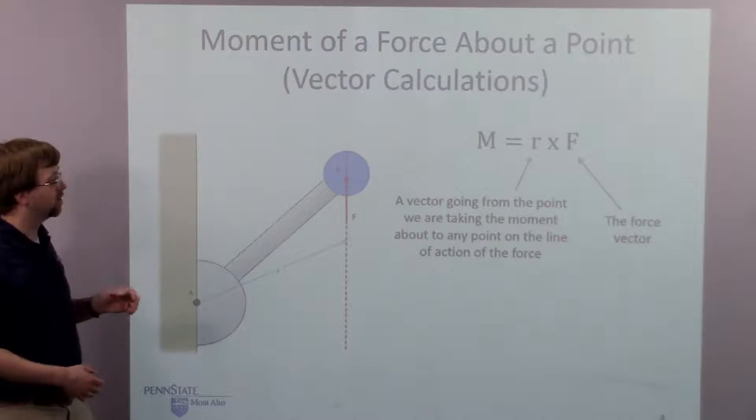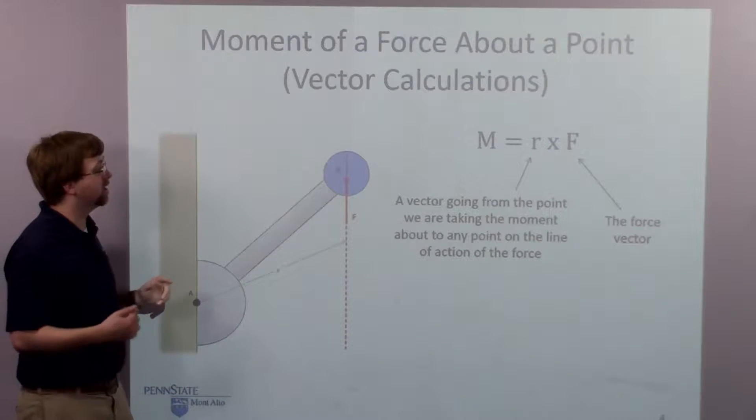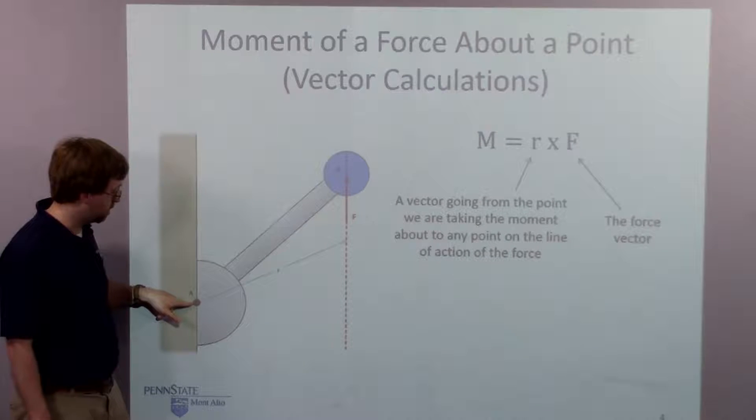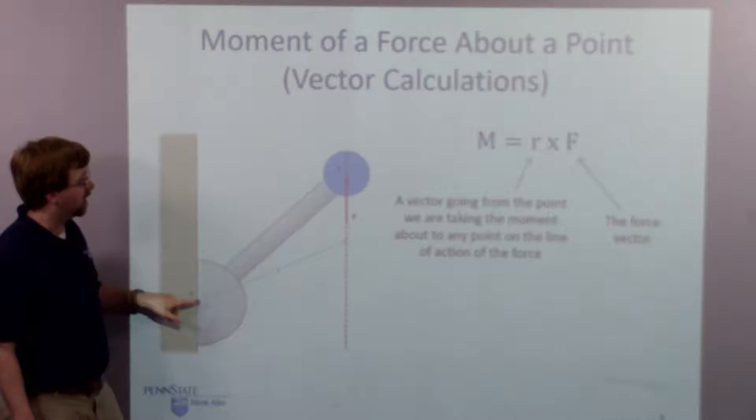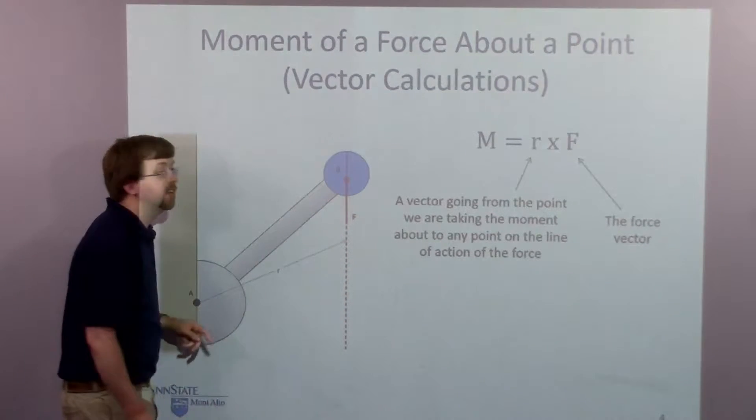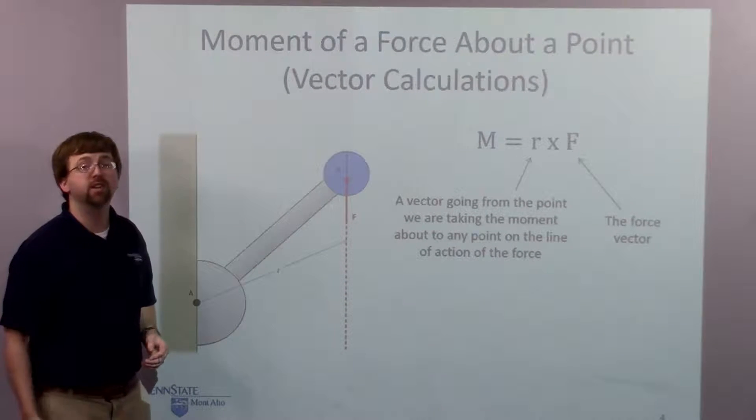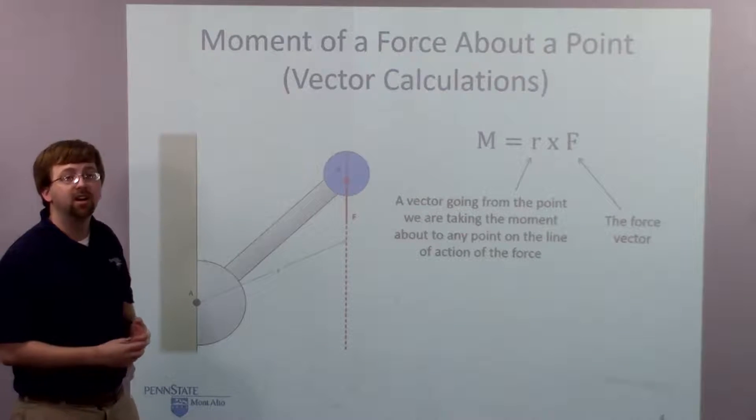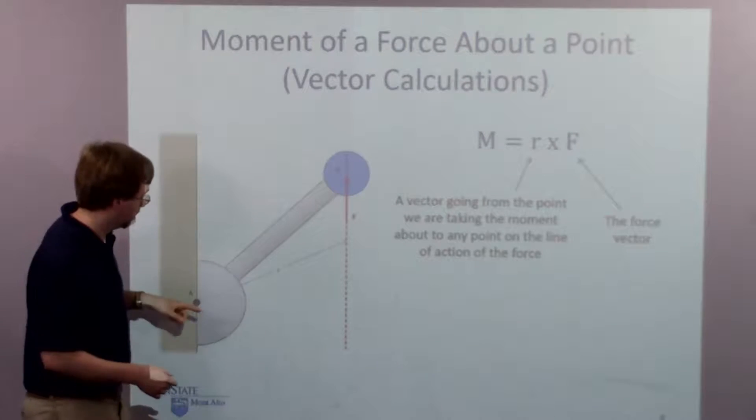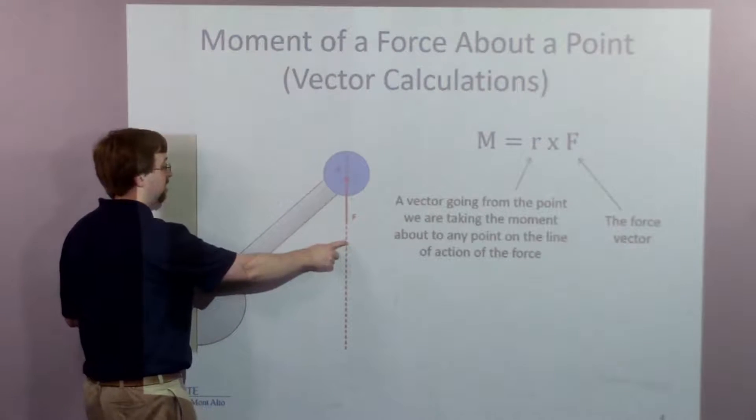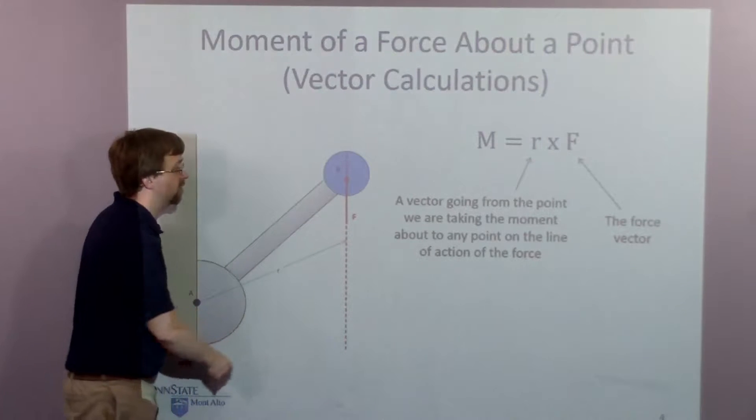The r vector is the new one to this. So r is a vector going from the point, so whatever point we're looking at, the moment about point A in this case, we want to go from this point to somewhere on the line of action. And the nice thing with the vector operation is it doesn't matter where we go to. We go to somewhere that's convenient, somewhere where we already know the dimension. So I'm going from this point, I've got this r vector, it's got x, y, and z components, and I go out to some point on the line of action.